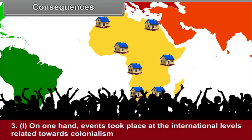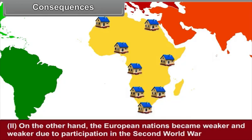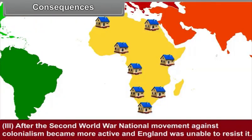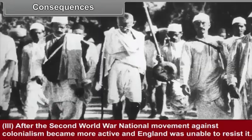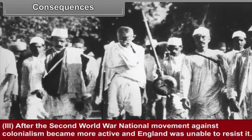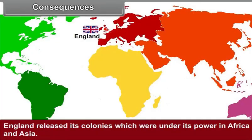Events took place at international levels related to colonialism. The European nations became weaker and weaker due to participation in the Second World War. After the Second World War, the national movement against colonialism became more active and England was unable to resist it. England released its colonies which were under its power in Africa and Asia.